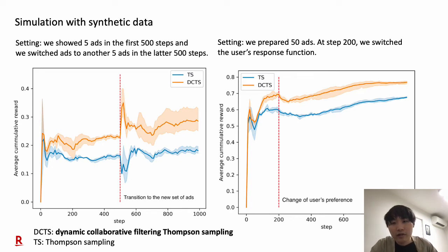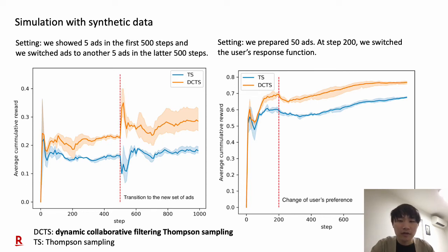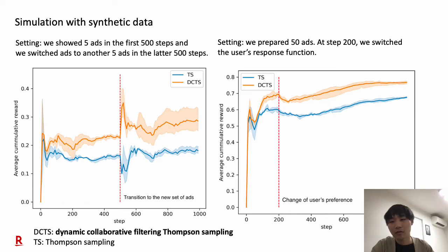To evaluate our model, we first conducted a simulation with synthetic data. The left figure shows the result of transferring knowledge across two different sources. In this setting, we showed five ads in the first 500 steps, and switched ads to another five ads in the later 500 steps. Our proposed model, dynamic collaborative filtering Thompson sampling, transferred first-half information to optimize the later half. The x-axis means time step and y-axis means average cumulative reward. The vertical red line shows the time step we switched. The shaded band indicates the 95% confidence interval obtained by three trials. The right figure shows the change of the user's preference. In this setting, we prepared 50 ads, and at time step 200 we switched the user's response function.